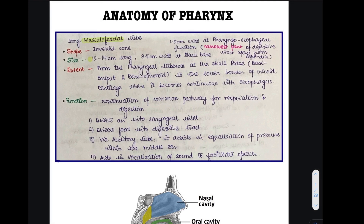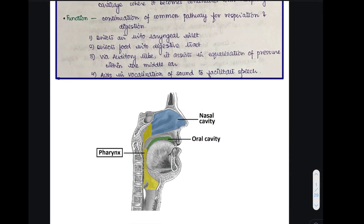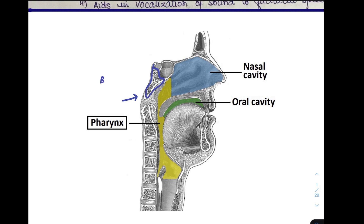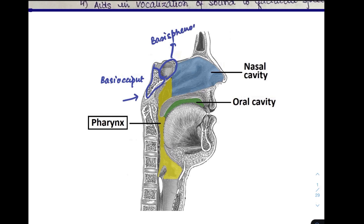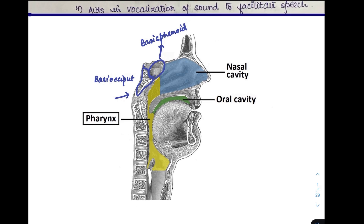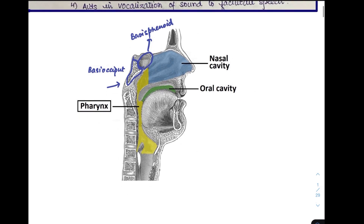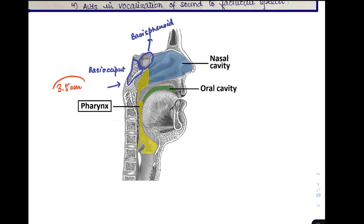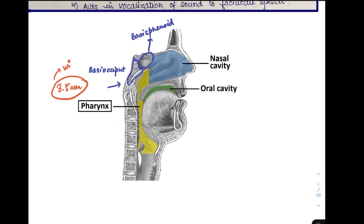It is important to know the dimensions of the pharynx. It is about 12 to 14 centimetres long. When we come to width, it is not uniform throughout the length of the pharynx — it is variable at different locations. The upper limit of the pharynx is the skull base, formed by two structures: the basi-occiput and the basisphenoid. At this level, the pharynx is about 3.5 centimetres in width, which is the widest part of the pharynx.